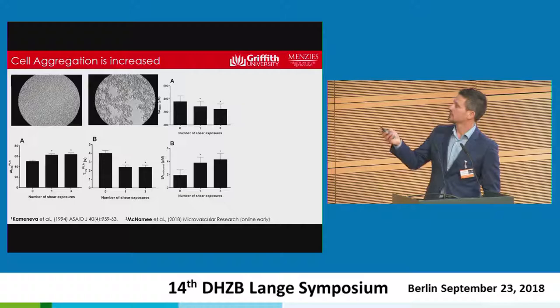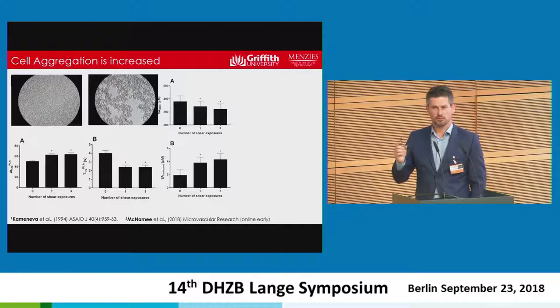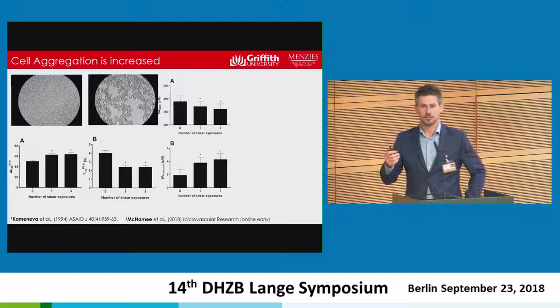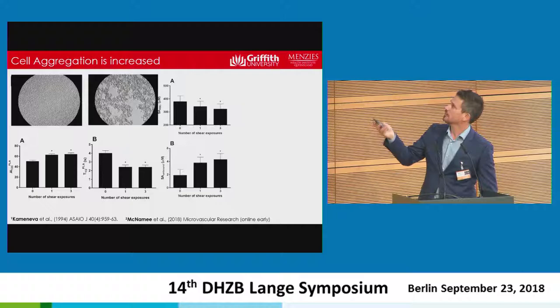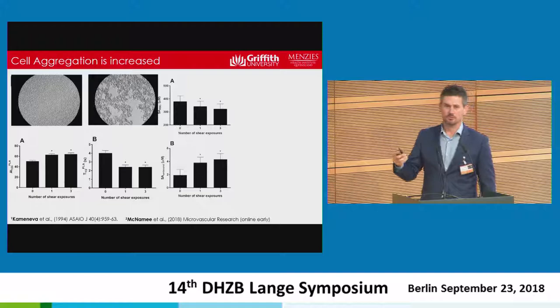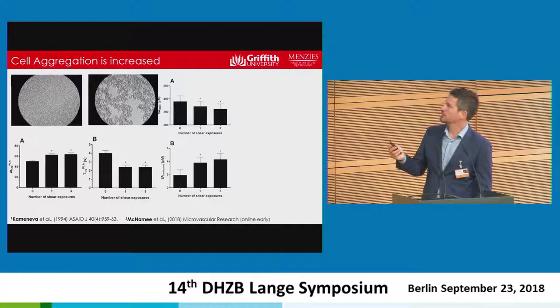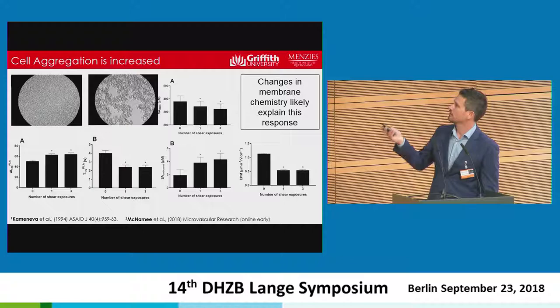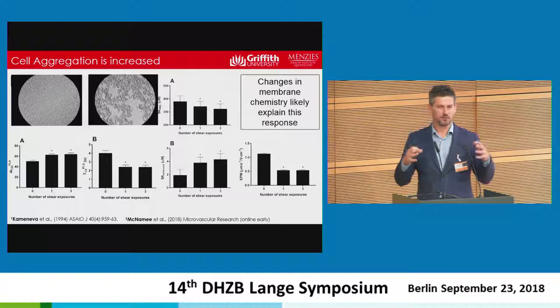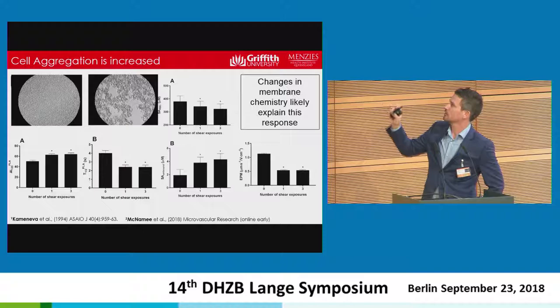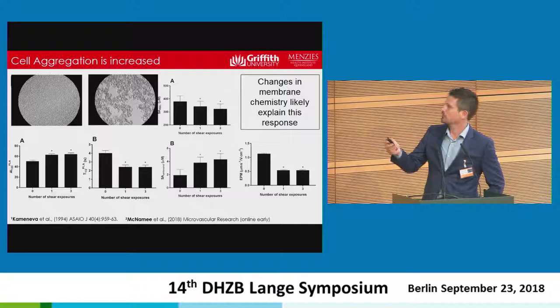We then looked at the surface chemistry of cells — specifically the amount of sialic acid, an important glycoprotein on the cell membrane that gives the cell its negative charge. Typically erythrocytes have a negative charge so they repel each other and resist aggregation. A single exposure to a high shear region decreased sialic acid on the cell membrane in a stepwise manner with each pass, and free sialic acid in the plasma increased correspondingly. Functionally, measuring electrophoretic mobility showed the cell had a reduced negative charge and was less able to repel. This surface chemistry likely explains why blood is hyper-aggregable and therefore hyperviscous in bypass.